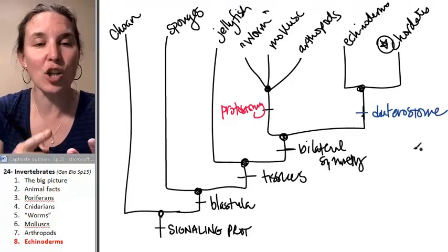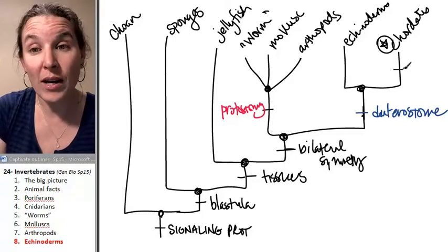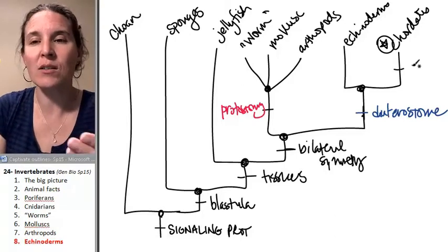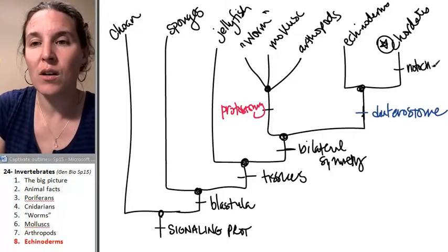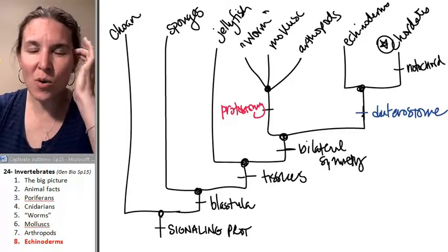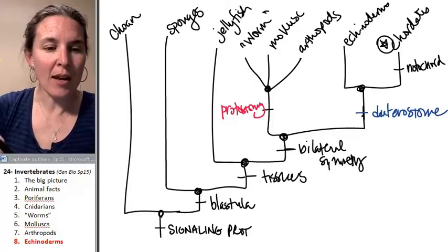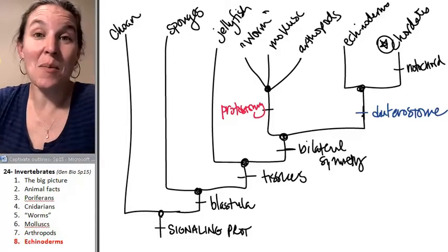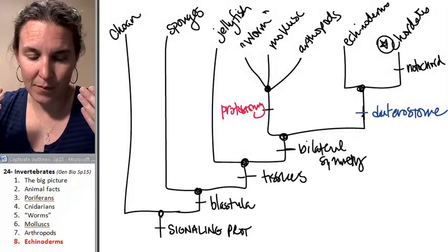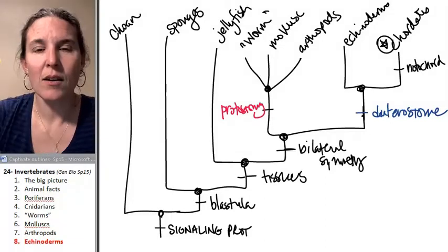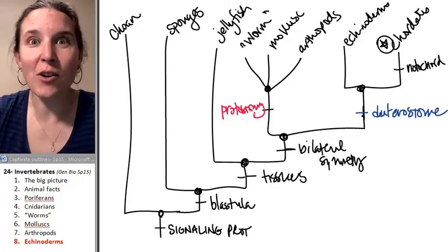Chordates include vertebrates. All chordates, at some stage in their life cycle, they have what's called a notochord. And the notochord is a structure that in some critters becomes the, I want to say vertebrae, but it's the spinal cord.